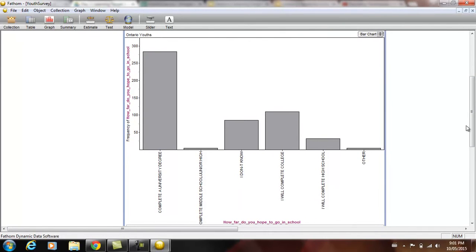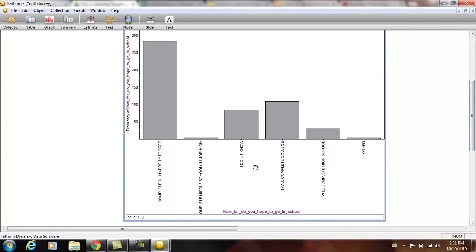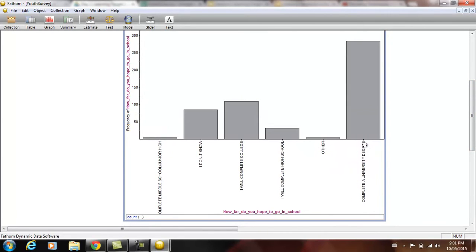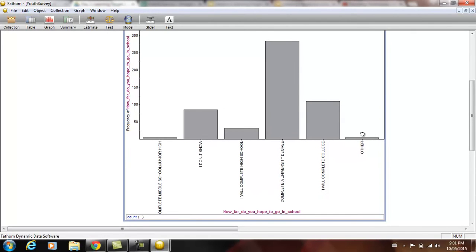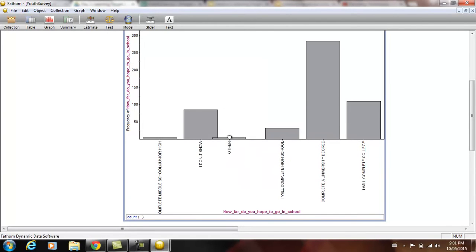And so the thing about this is this isn't ordinal. We can't just put these in an order. You might think completing a university degree goes here, but somebody else might think that college is actually better. I know people that make more money with college diplomas than their university. But then we don't even know what other is. So that could be the best, that could be the highest.